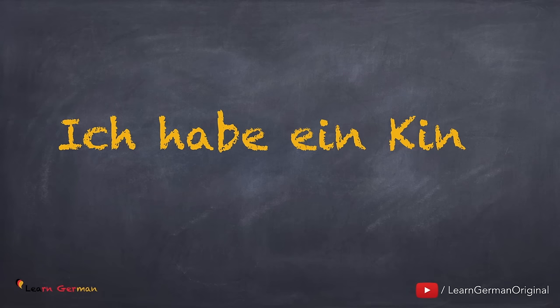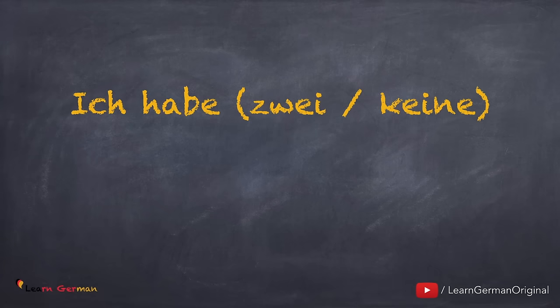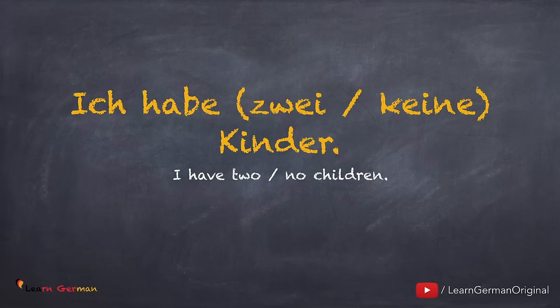If you have a kid, you can say Ich habe ein Kind. Noch einmal. Ich habe ein Kind. If you have more than one kid, you will say Ich habe zwei Kinder. Noch einmal. Ich habe zwei Kinder, oder drei Kinder. If you have no kids, then you can say Ich habe keine Kinder. Noch einmal. Ich habe keine Kinder.